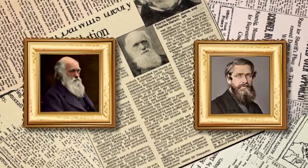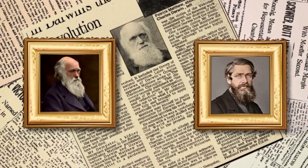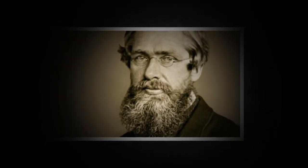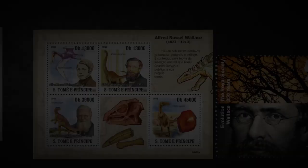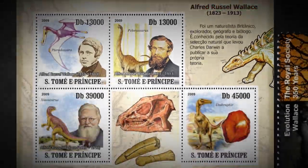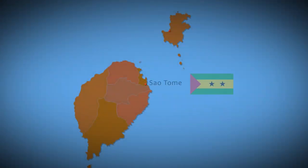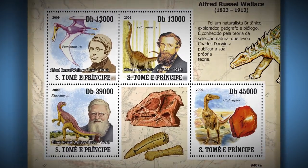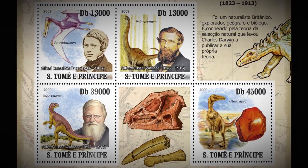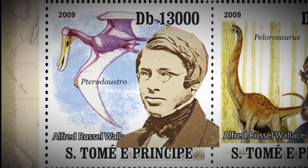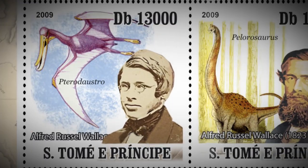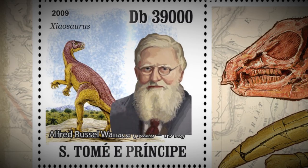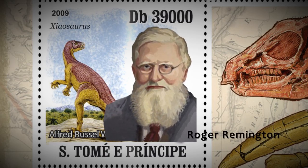Darwin and Wallace became household names in the fields of biology and zoology, though Wallace was often buried in the shadows of his contemporary, and stamps bearing his name and works are rare. The São Tomé and Príncipe issued stamps featuring Alfred Wallace from his younger days to his accomplished age — in the first stamp he is 24 years old, the second 46 years old, and the last stamp features a portrait from an oil painting made by Roger Remington.